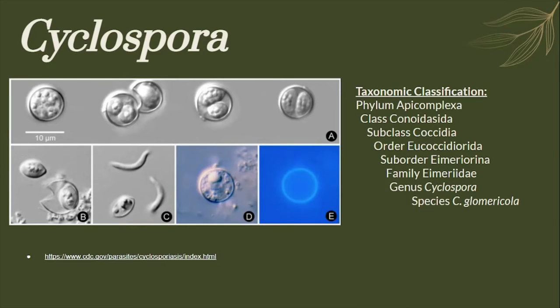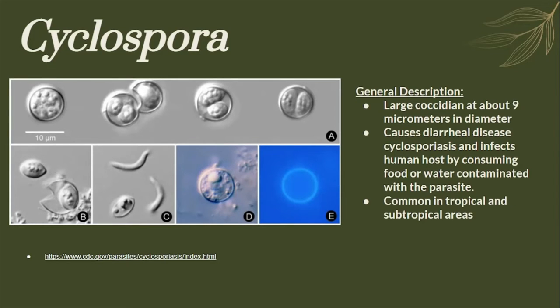Here is the taxonomic classification of the genus Cyclospora. It is a large coccidian at about 9 micrometers in diameter. It causes the diarrheal disease Cyclosporiasis, and infects human hosts by consuming food or water contaminated with the parasite. It is common in tropical and subtropical areas.